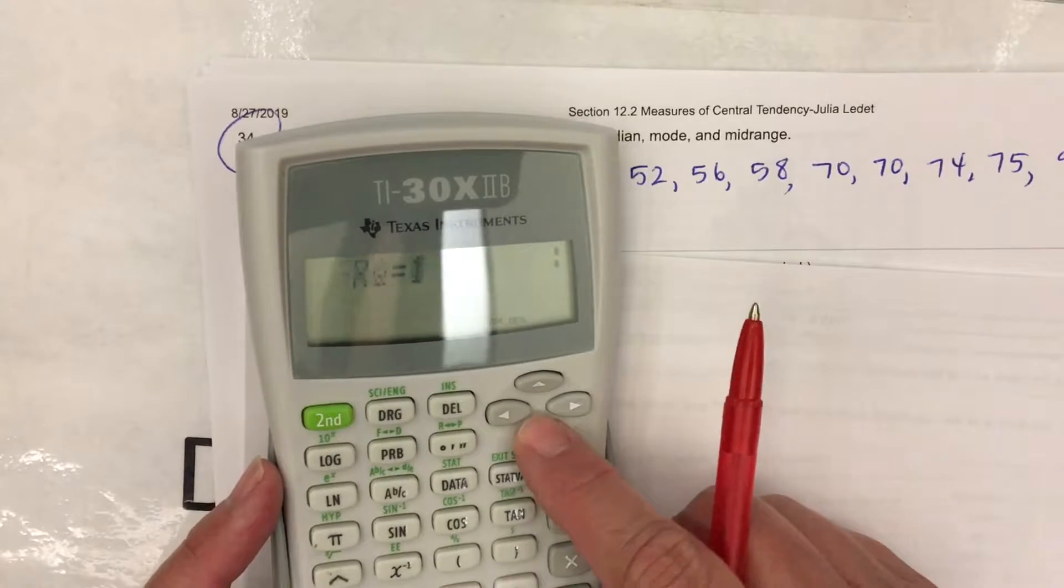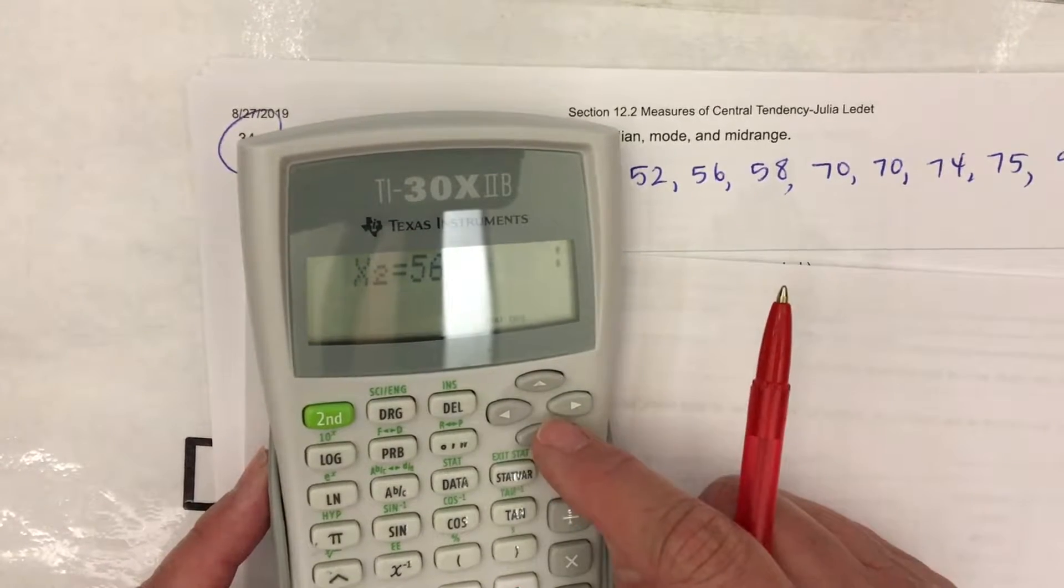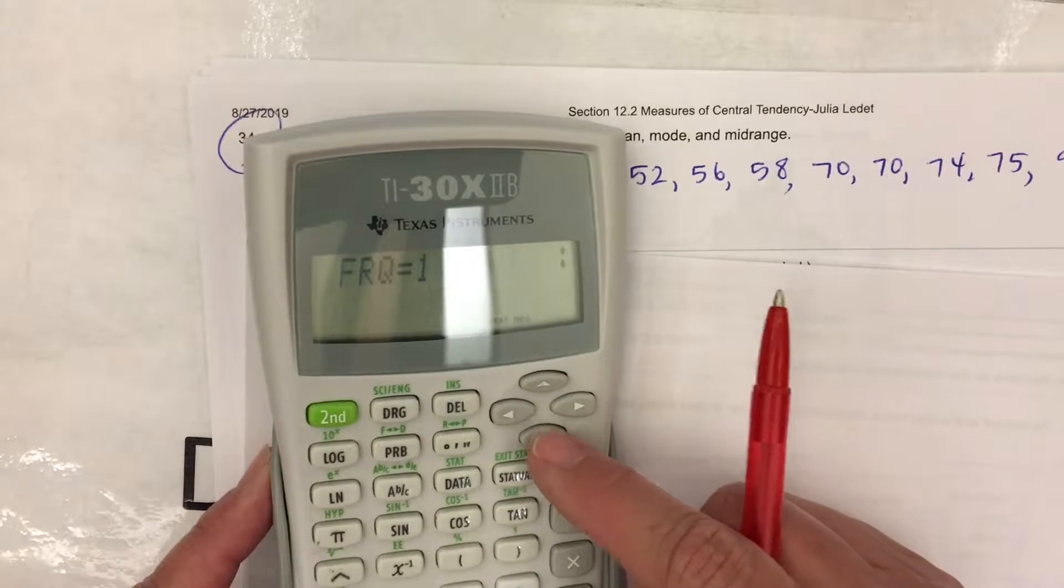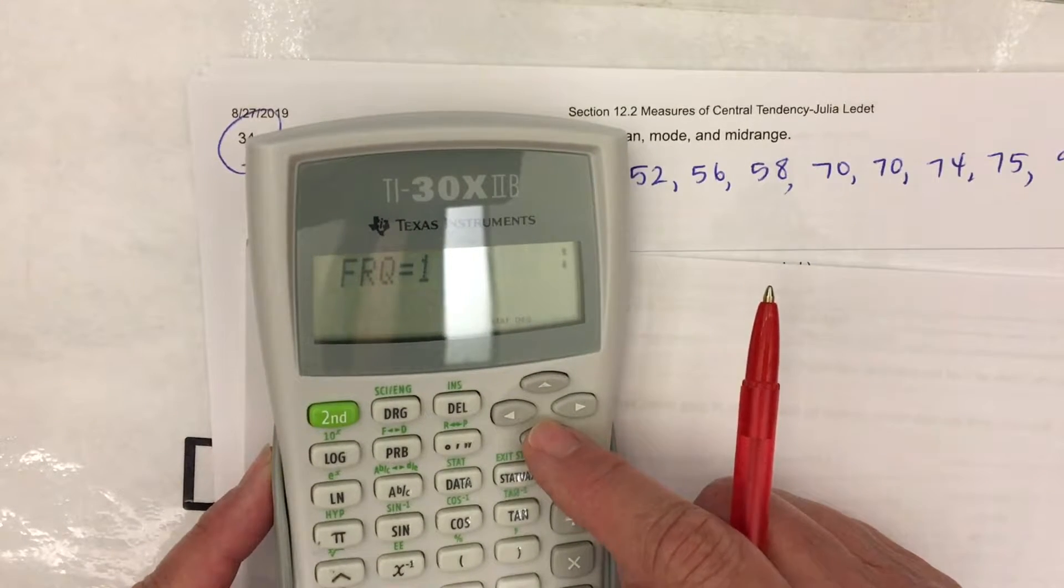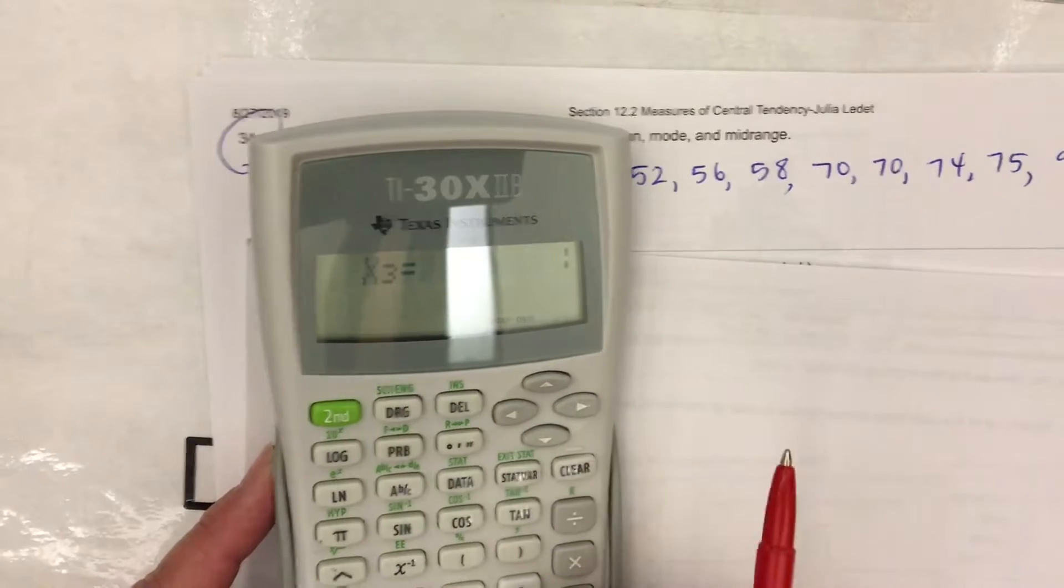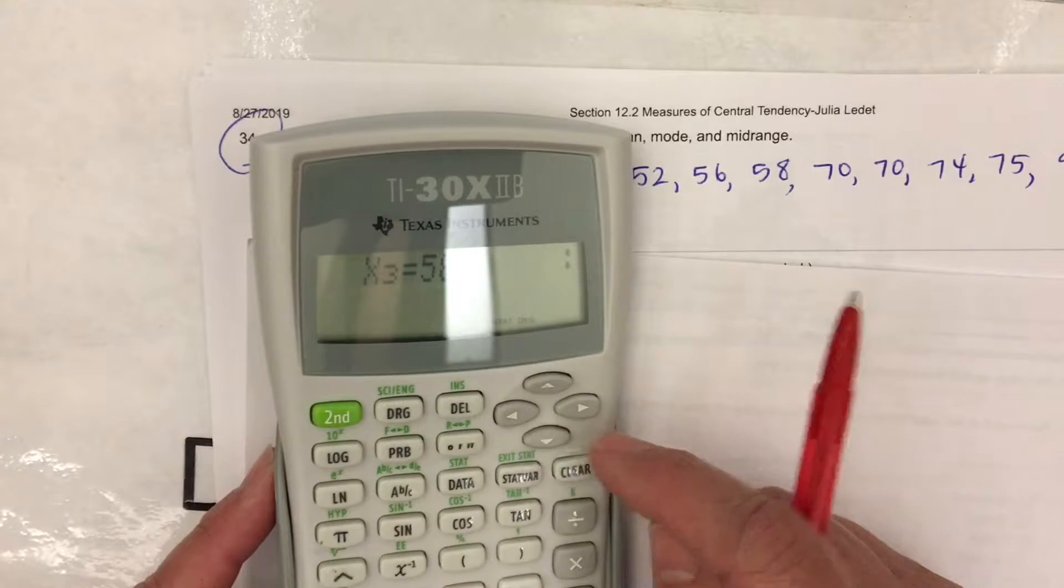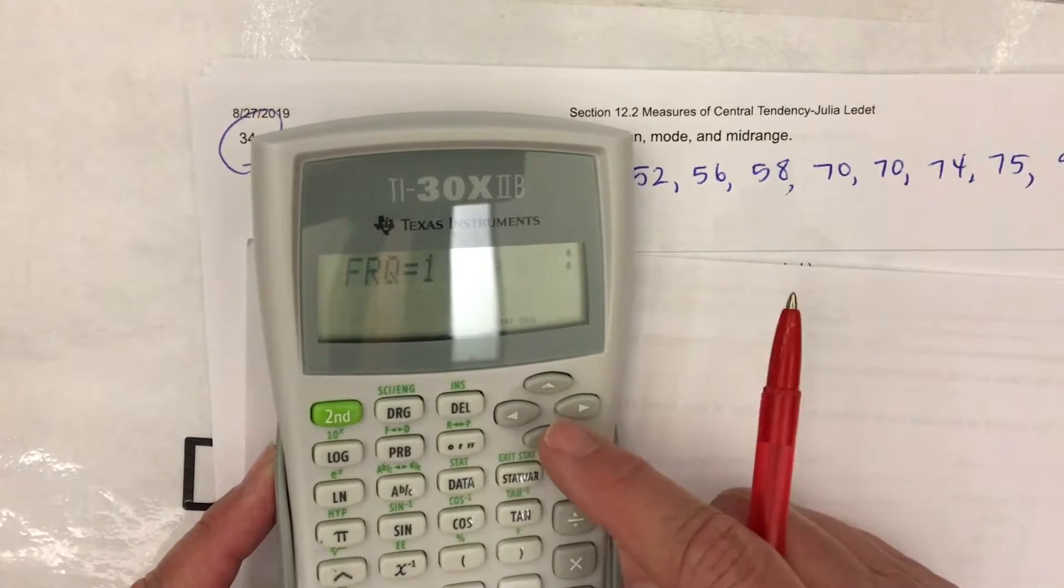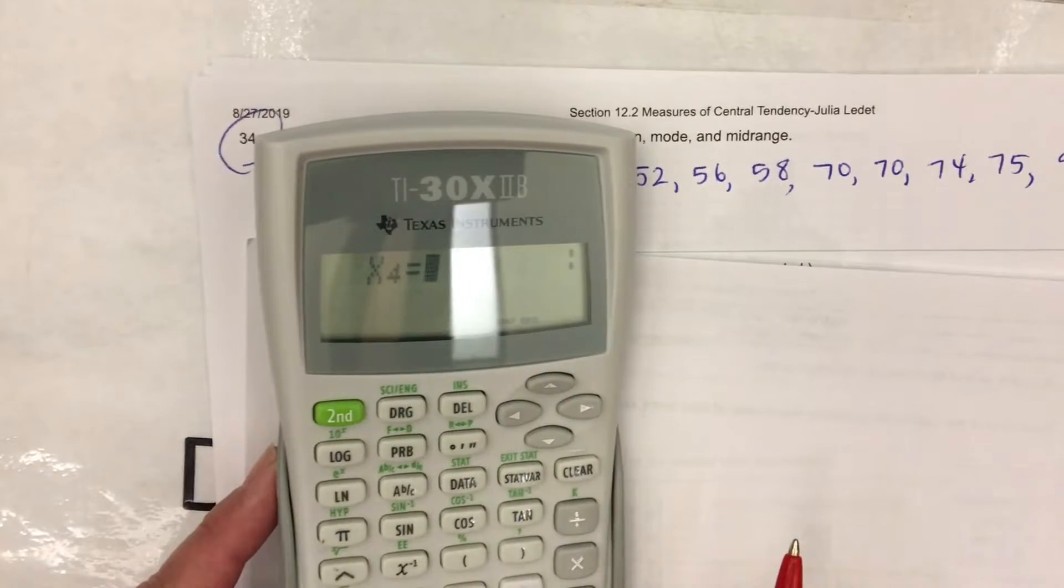Use the down arrow. X number two is 56. Use the down arrow. It's a frequency of one. That looks good. Down arrow again. Next one, X number three is 58. Down arrow. Frequency is one. We're ready for the next data point.